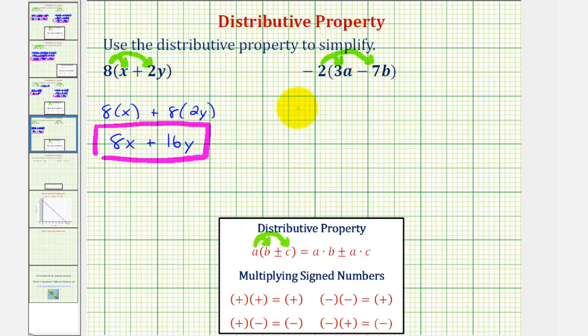So negative 2 times 3a is negative 6a. Here we have minus negative 2 times 7b would be negative 14b.